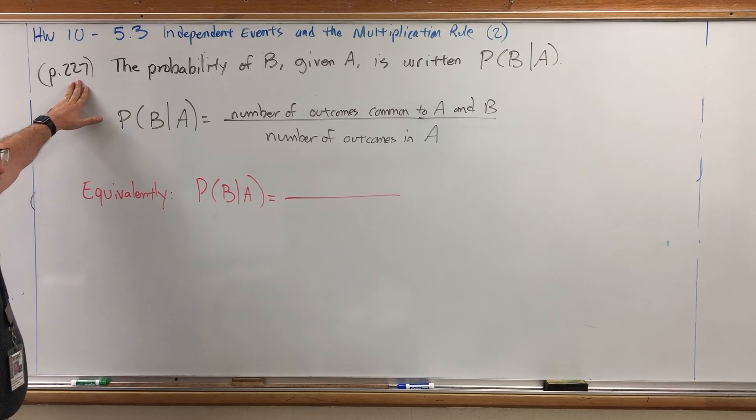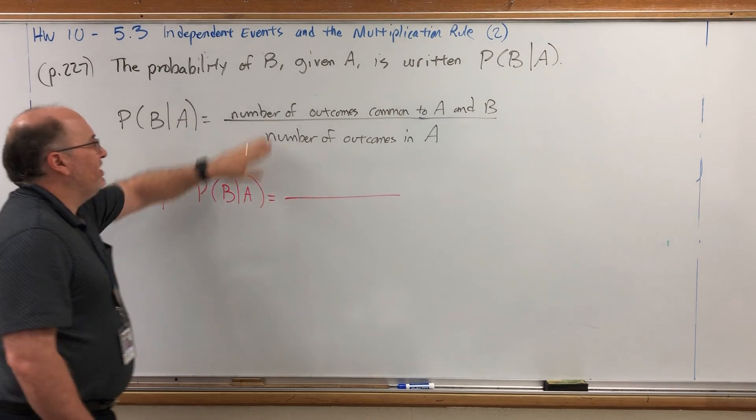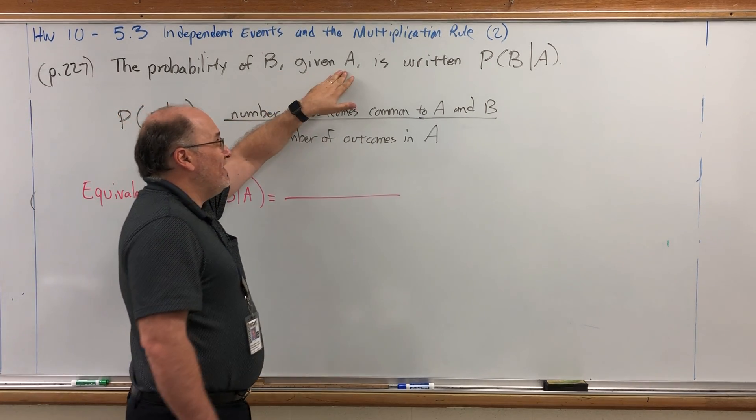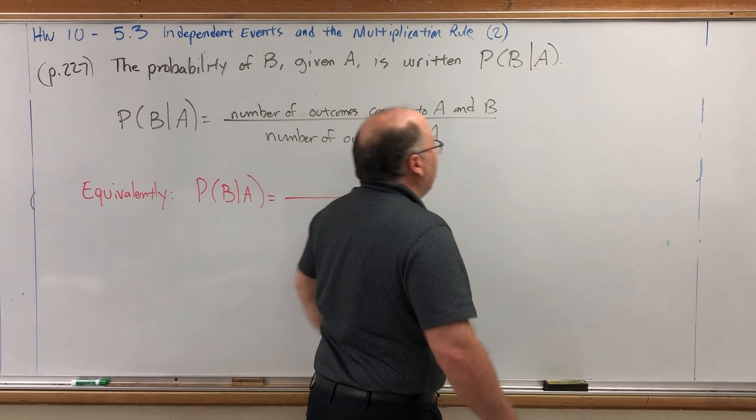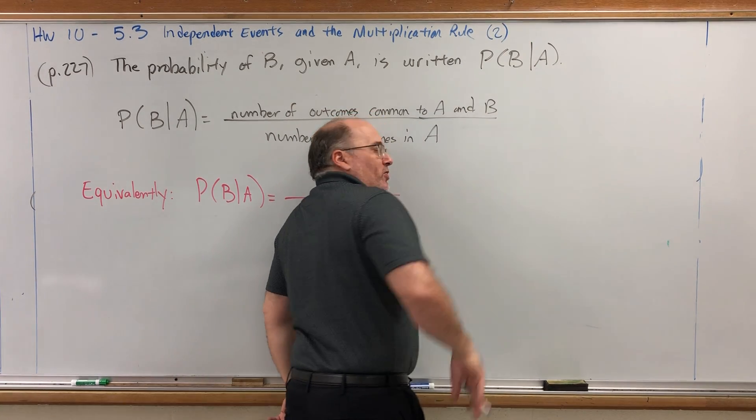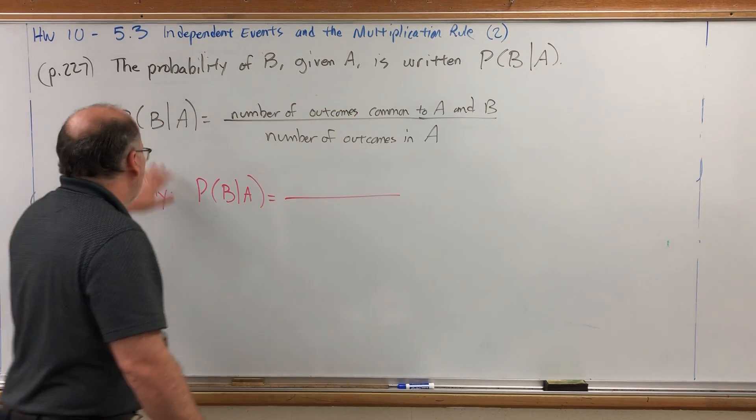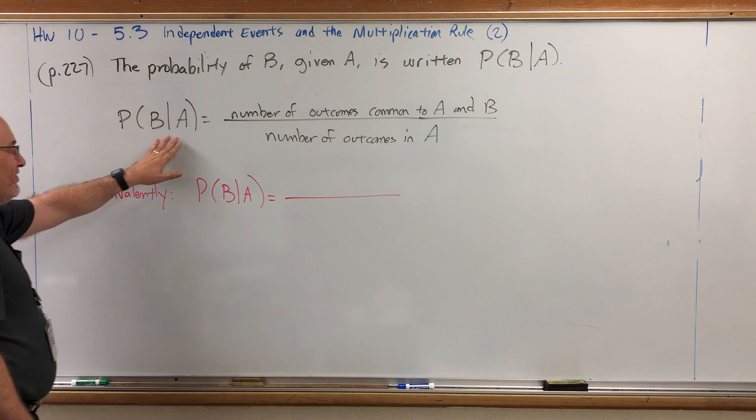This is on page 227 in your book. The probability of event B, given event A, is written as the probability of B, given A. The word given is written as a vertical line. The formula for the probability of B, given A, is similar to what we did in the previous problem.